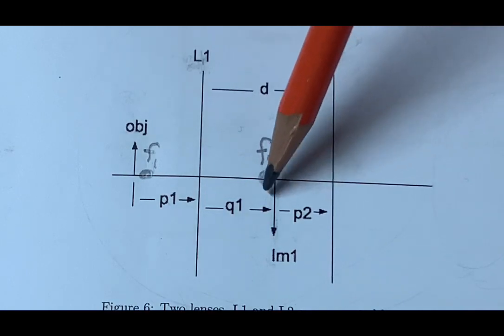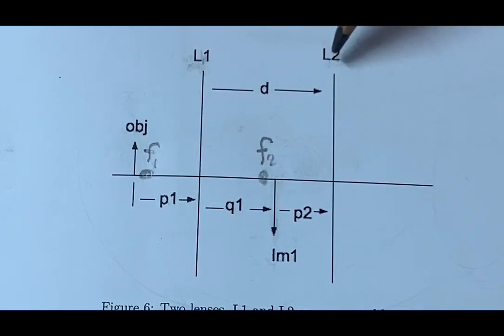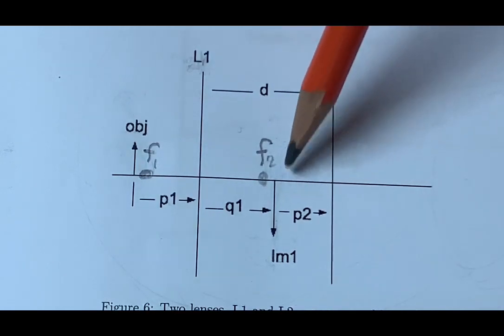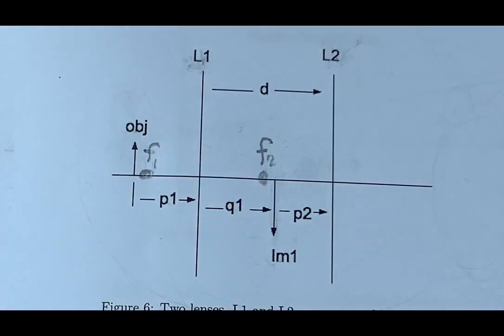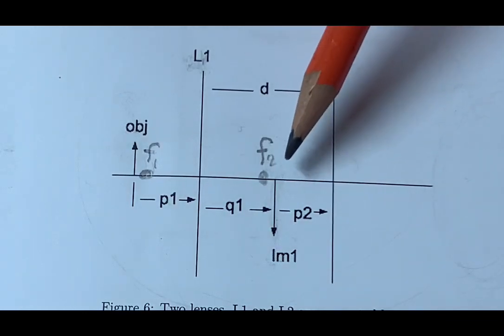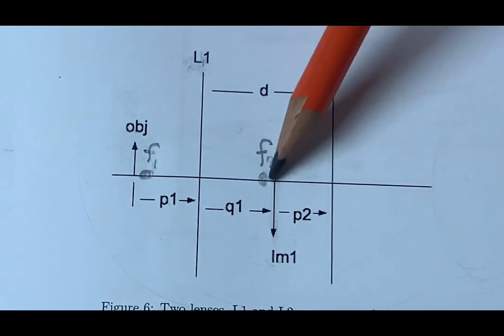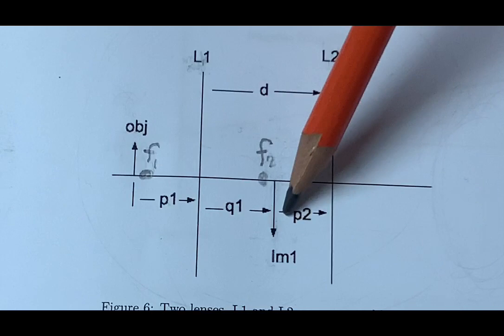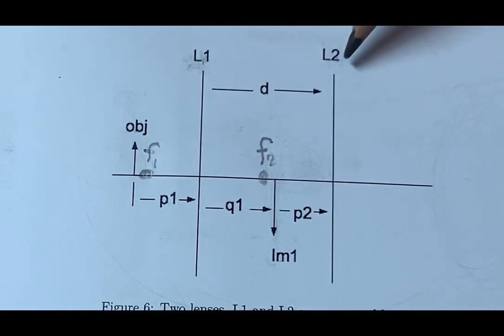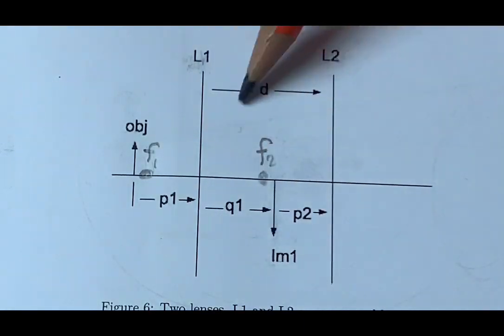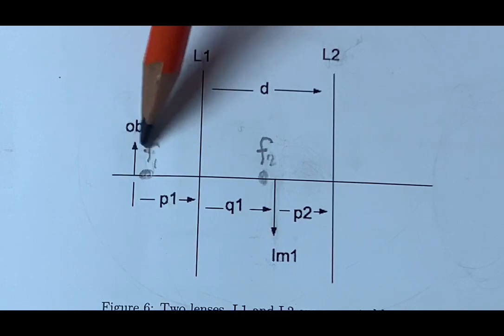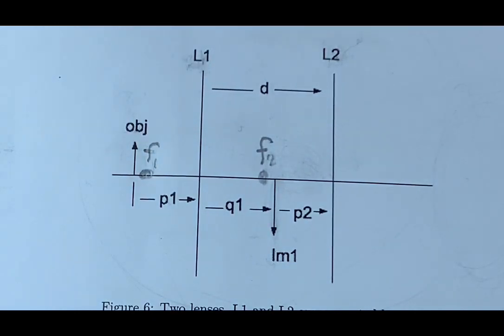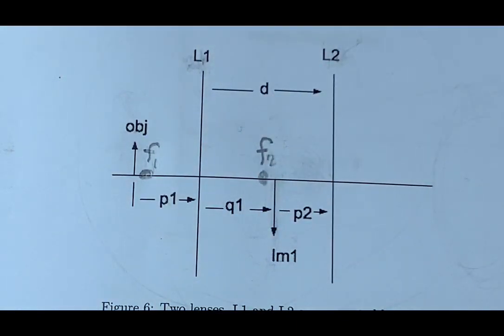For the microscope, Image 1 must fall within the focal length of L2 — to the right of f2 in the diagram — so that it acts as a virtual object for lens two. This produces a virtual final image on the left side of L2. We place our object very close to the focal length of lens one and look through the eyepiece to observe the magnified virtual image.